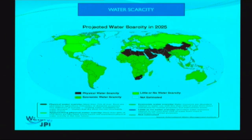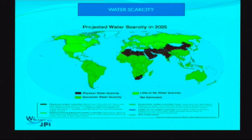The projected water scarcity in 2025 — shown in red — represents physical water scarcity, meaning more than 75 percent of river flows are used by agriculture, industry, or domestic purposes. You can see these evolutions spreading from Arab countries and the Middle East through India, to China, and South Africa.